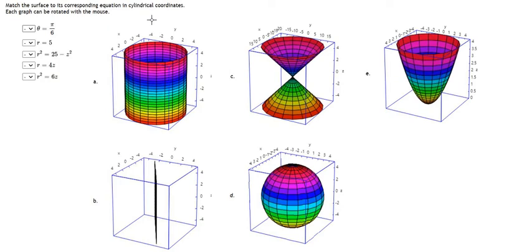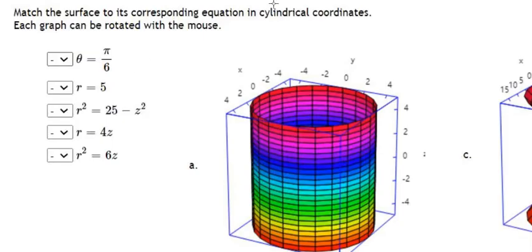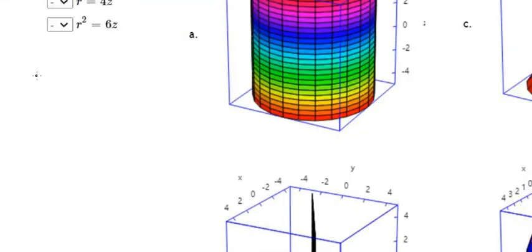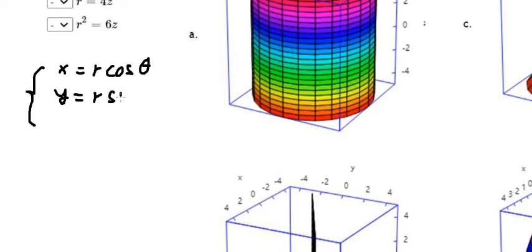Hello everybody. Today I will talk about calculus — the topic is cylindrical coordinates. The formulas are: x equals r cosine theta, y equals r sine theta, and z equals z.